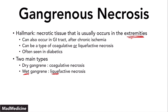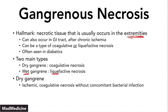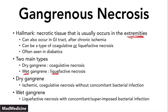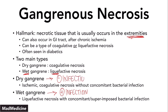In dry gangrene, you are going to get ischemic tissue with coagulative necrosis without any bacterial infection — there is no bacterial infection happening. In wet gangrene, you are going to see liquefactive necrosis with a superimposed bacterial infection happening on top of the actual gangrene. So wet gangrene has a positive infection, while dry gangrene has no infection.